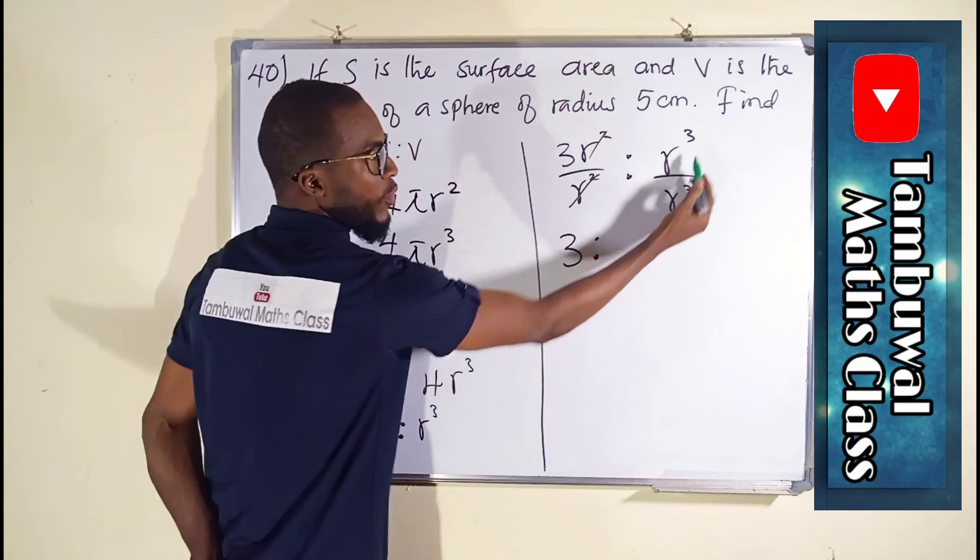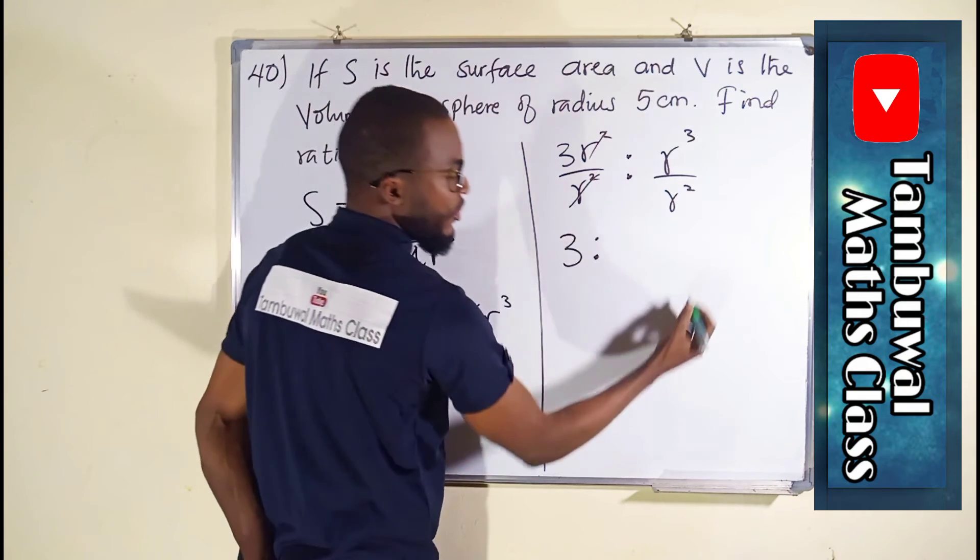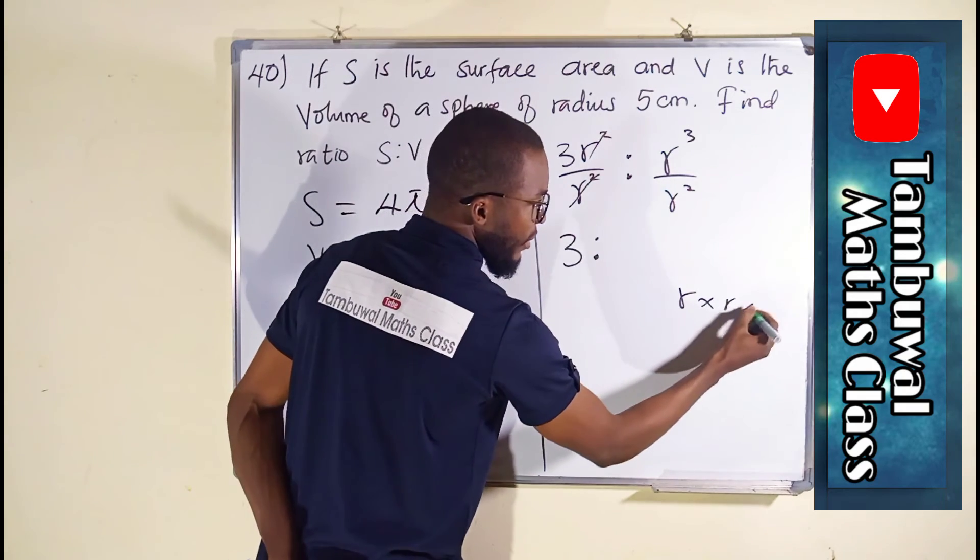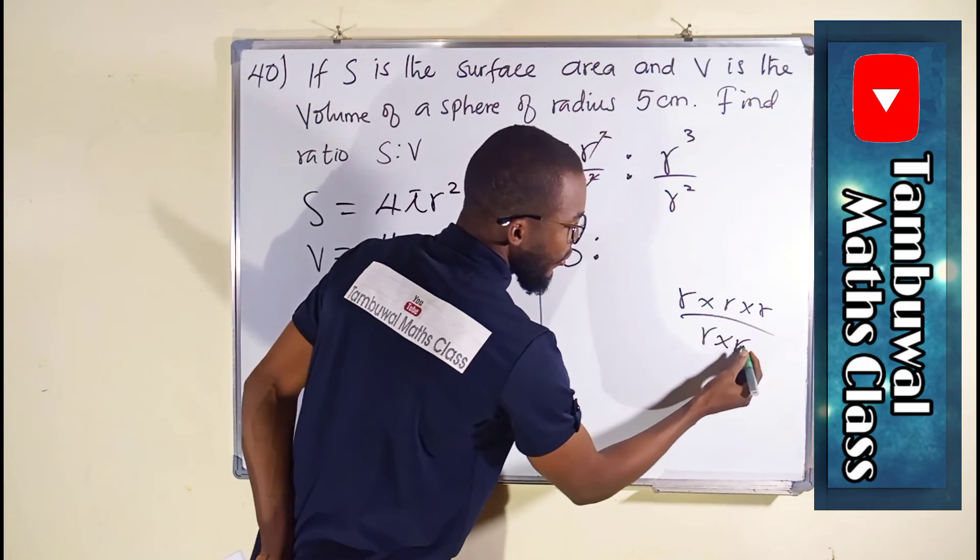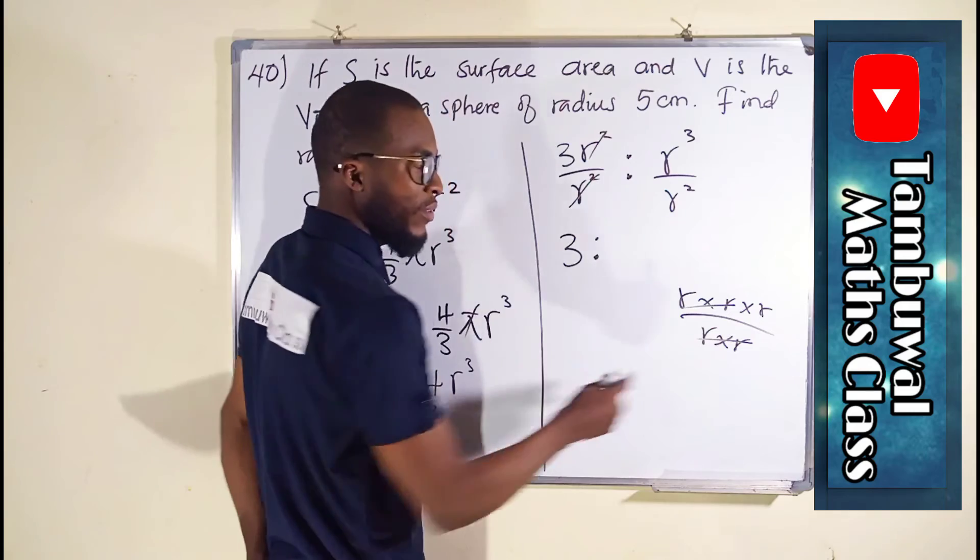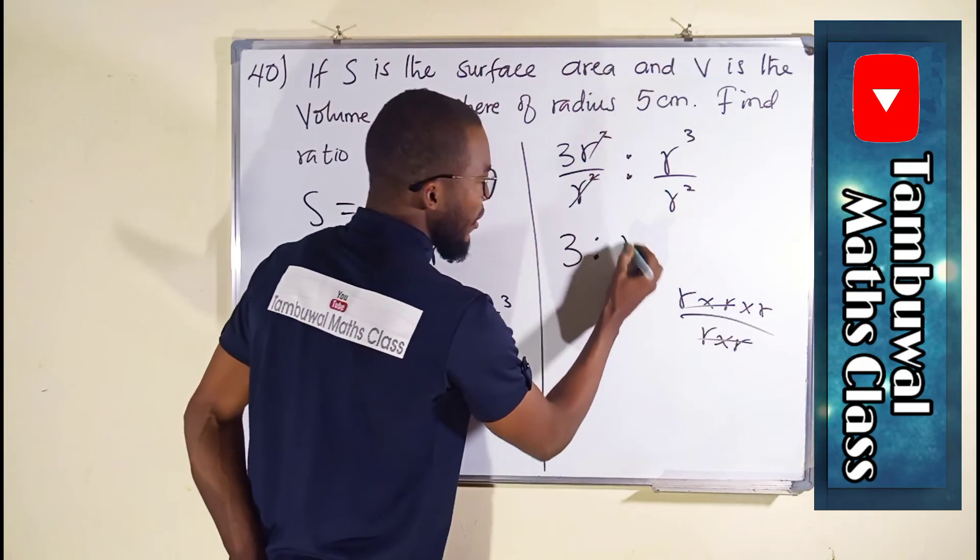You see this one has a power of 3. It's just like saying r times r times r divided by this one has a power of 2, r times r. So, these 2 r's will cancel these 2 r's, leaving only 1 r here.